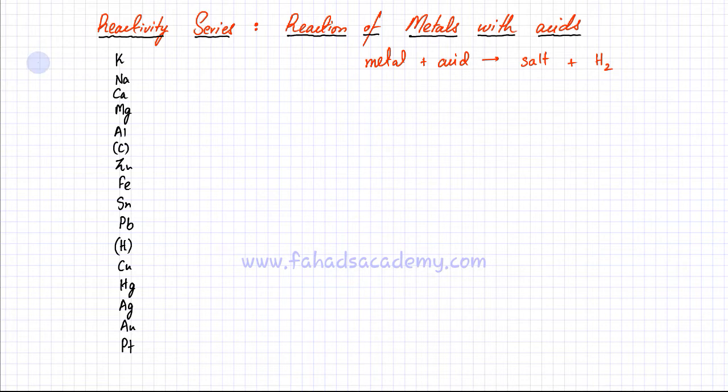The top elements in the reactivity series are the most reactive elements and the bottom ones are the least reactive. The reactive metals are going to have very vigorous reactions. All the metals have the same reaction: metal reacts with an acid, produces salt plus H2. Group 1 metals and some in group 2 are going to have very vigorous and explosive reactions with acids. These reactions should be avoided.